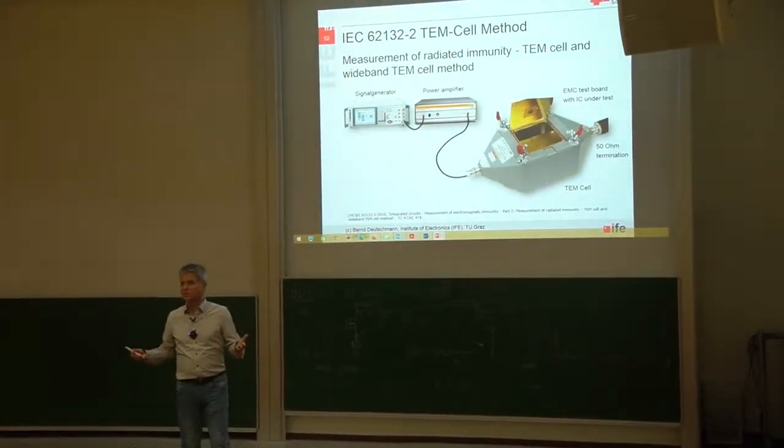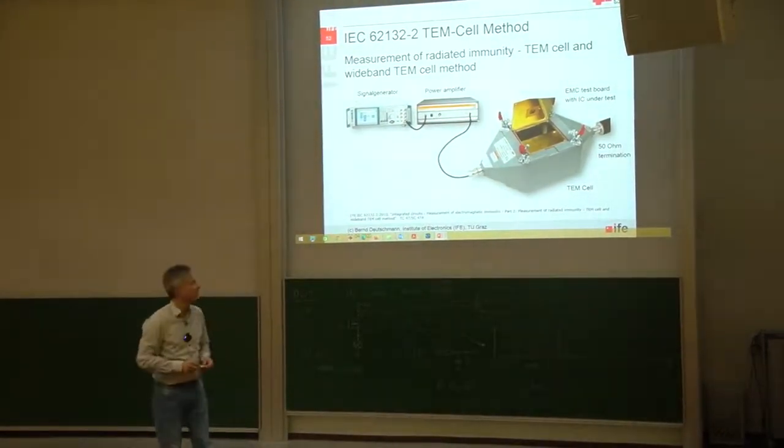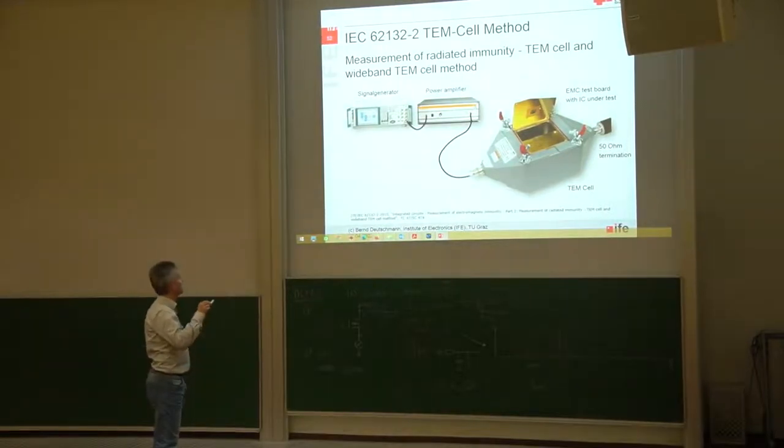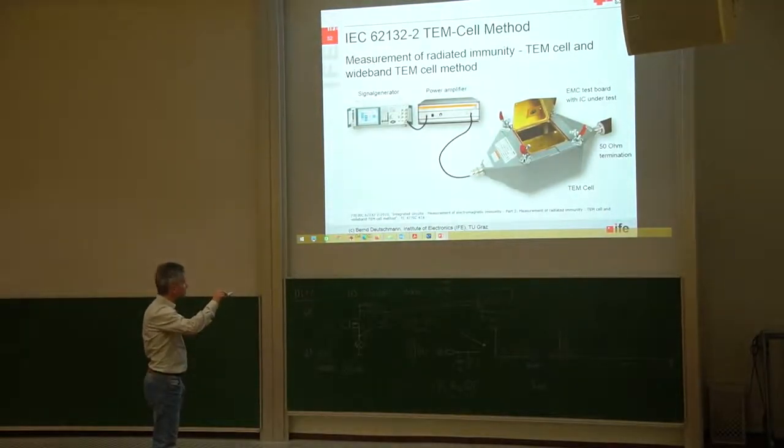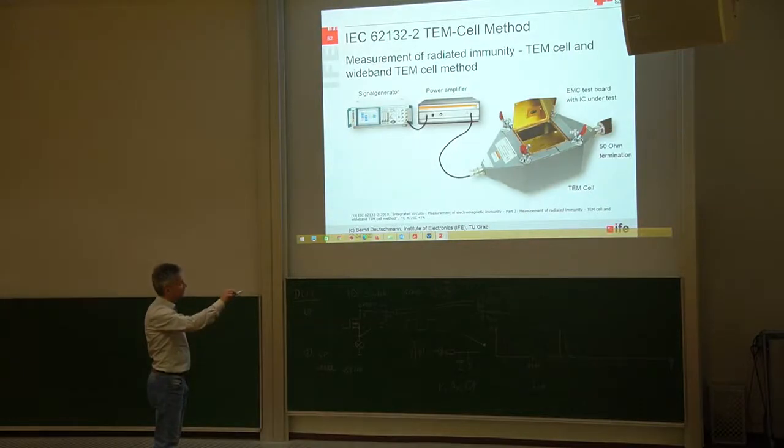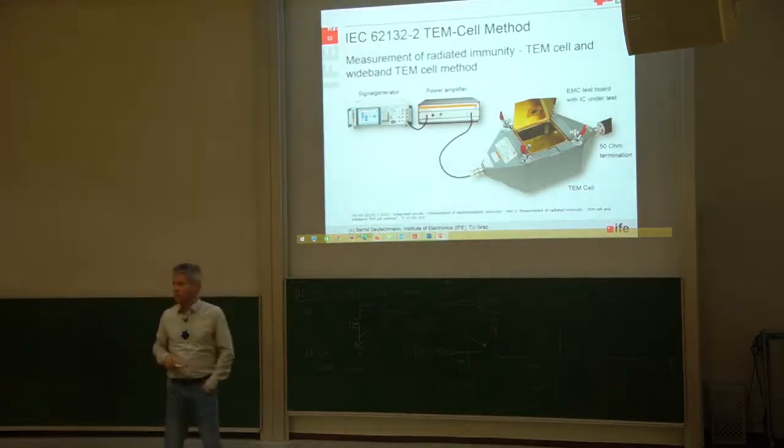So we are operating this DEM cell now vice versa. We are forcing a noise signal into one of the boards of the DEM cell. The other board is terminated by a 50 ohm resistor.